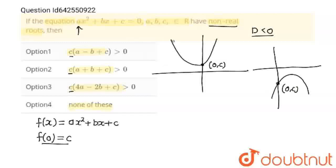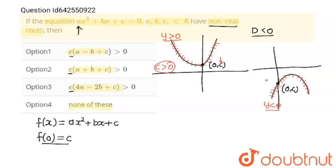Let's observe some other things in this curve. Here, all points are above the x-axis, which means the y-coordinate will always be greater than 0. And this other curve is below the x-axis, meaning the y-coordinate of all points will be less than 0. So in the first curve c > 0, and in the second curve c < 0.